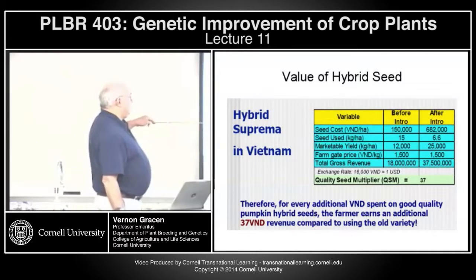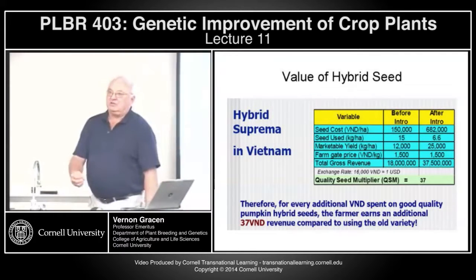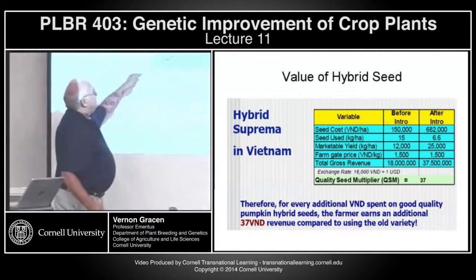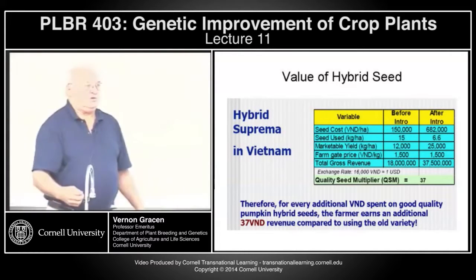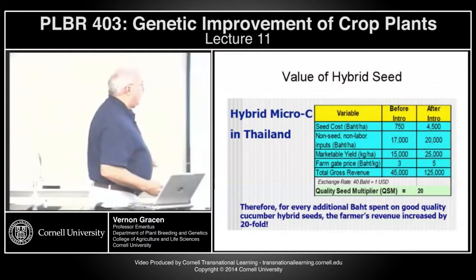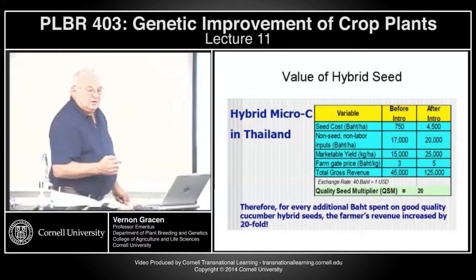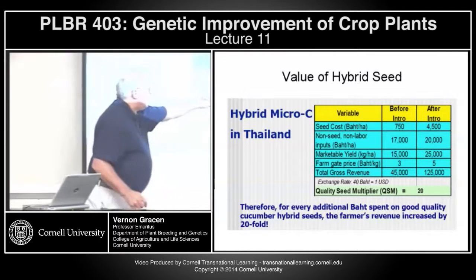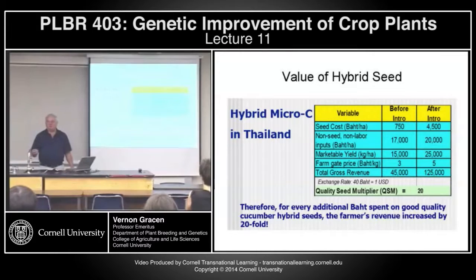For a hybrid pumpkin in Vietnam, that quality seed multiplier is 37 — for every dollar the farmer spends on hybrid seed instead of the available variety seed, he earns an additional $37 in revenue. For a hybrid cucumber in Thailand, for every dollar the farmer spends on hybrid seed, he gets $20 back in total profits from that hectare of land.